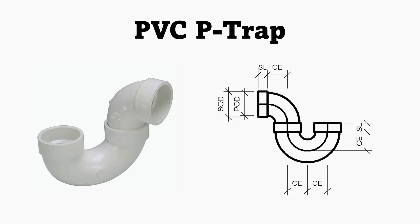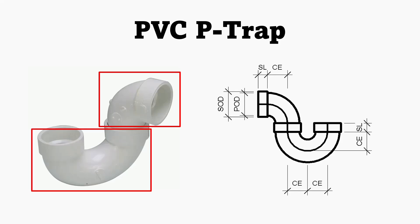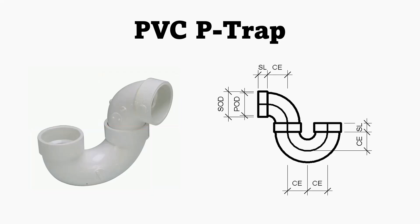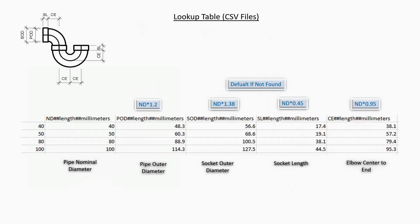Hello everyone. Today I would like to show you how to create a PVC P-trap Revit family with variable direction. In this video, I will create two parts of the family — elbow and main family — and then load and combine them into the main family. I will refer to the dimensions in the picture to create the parameters. This is the lookup table CSV file.